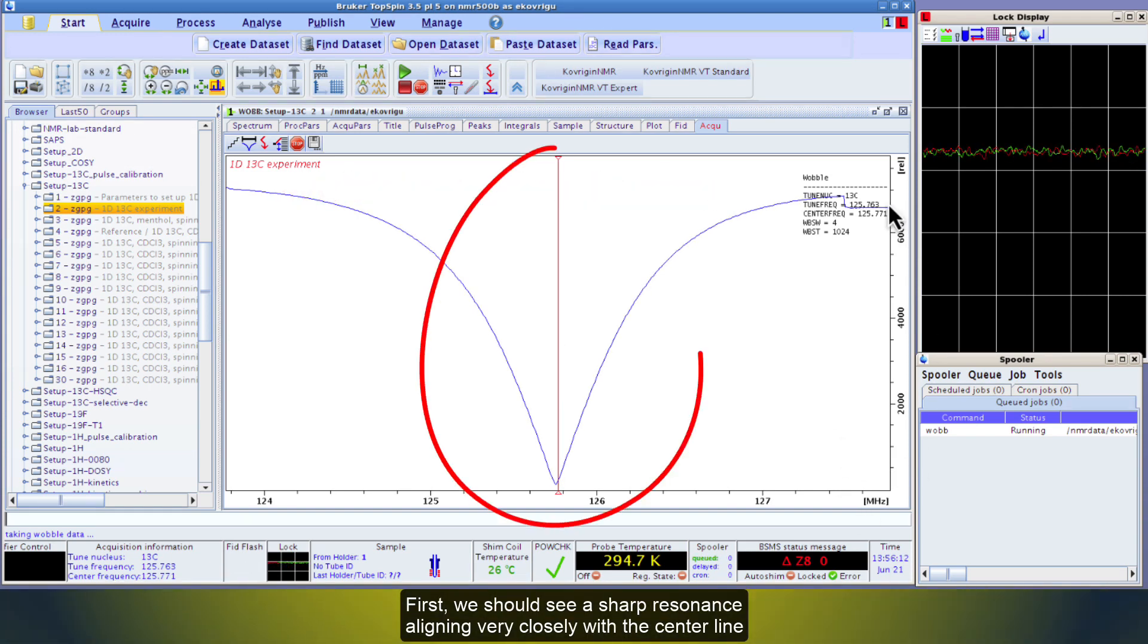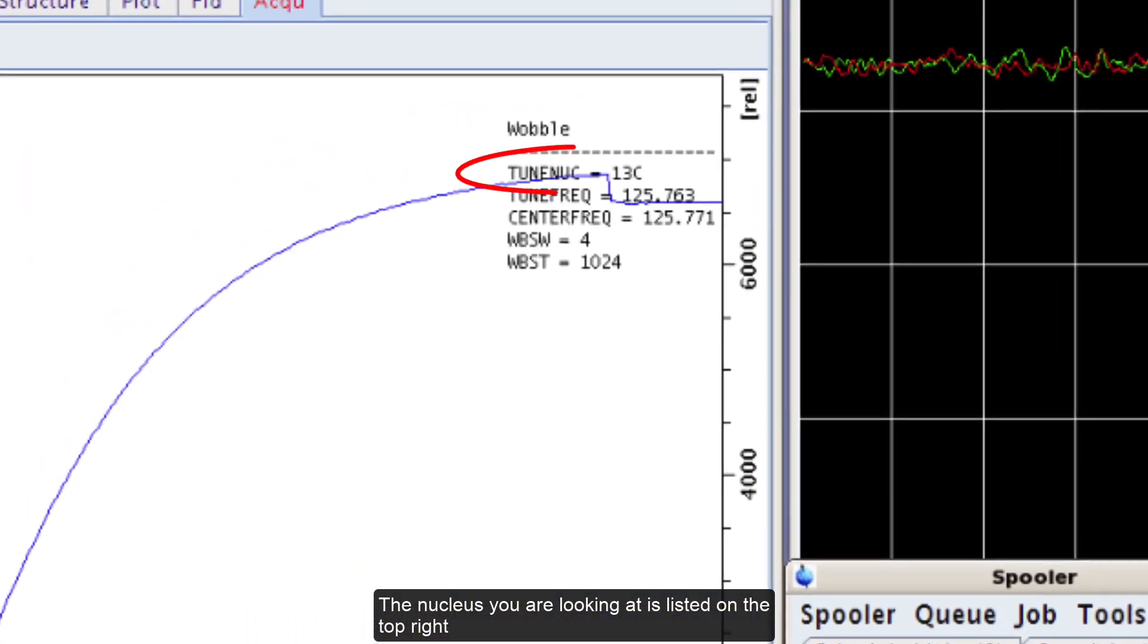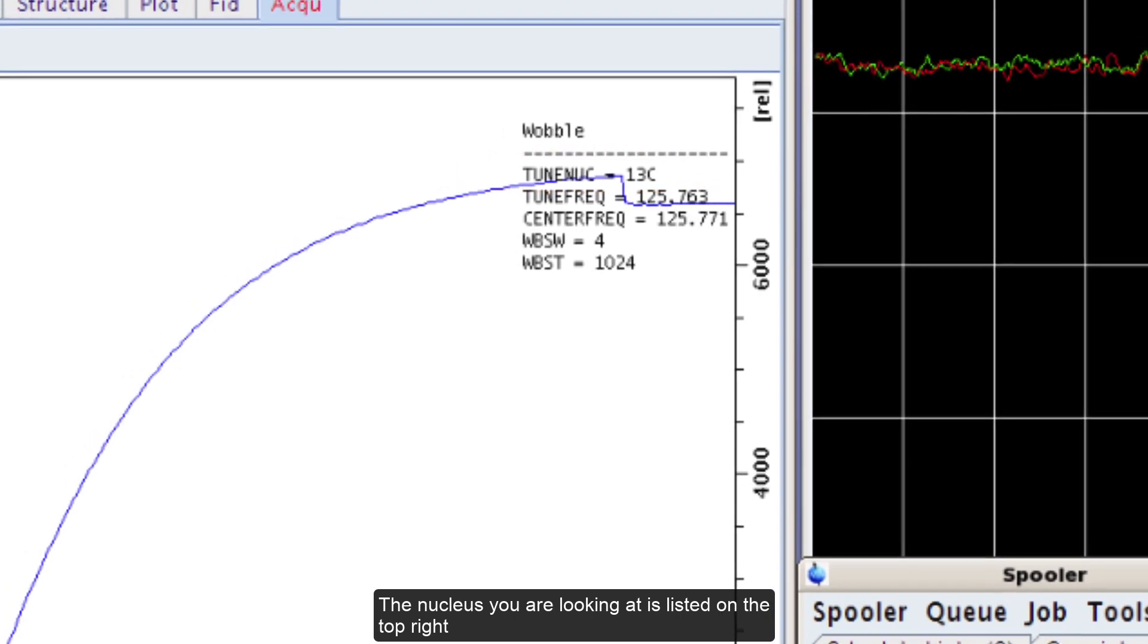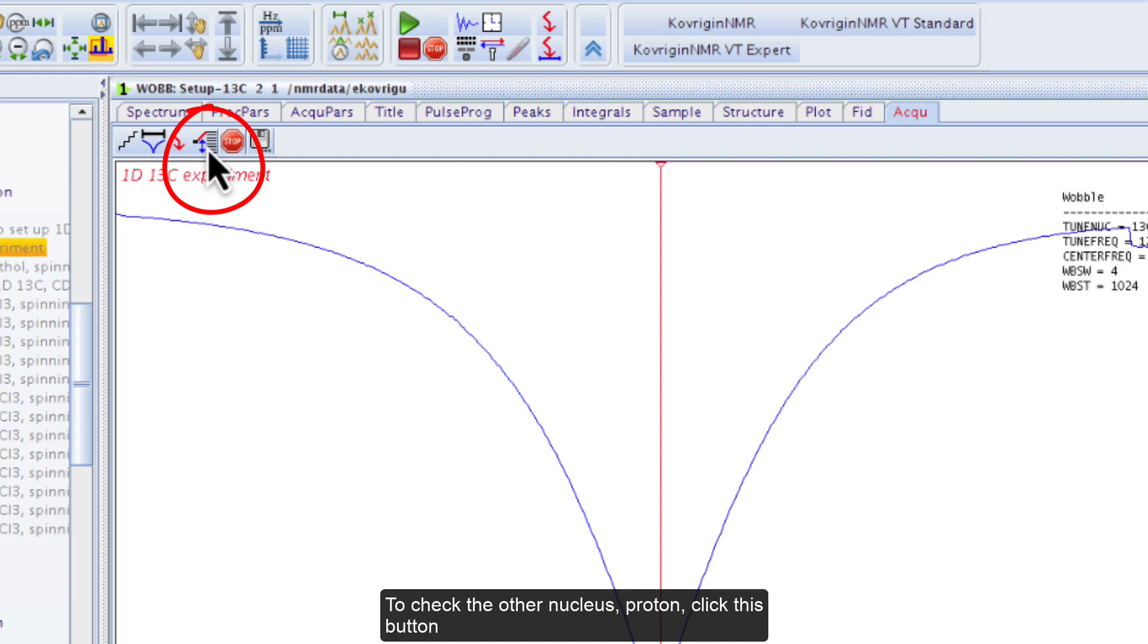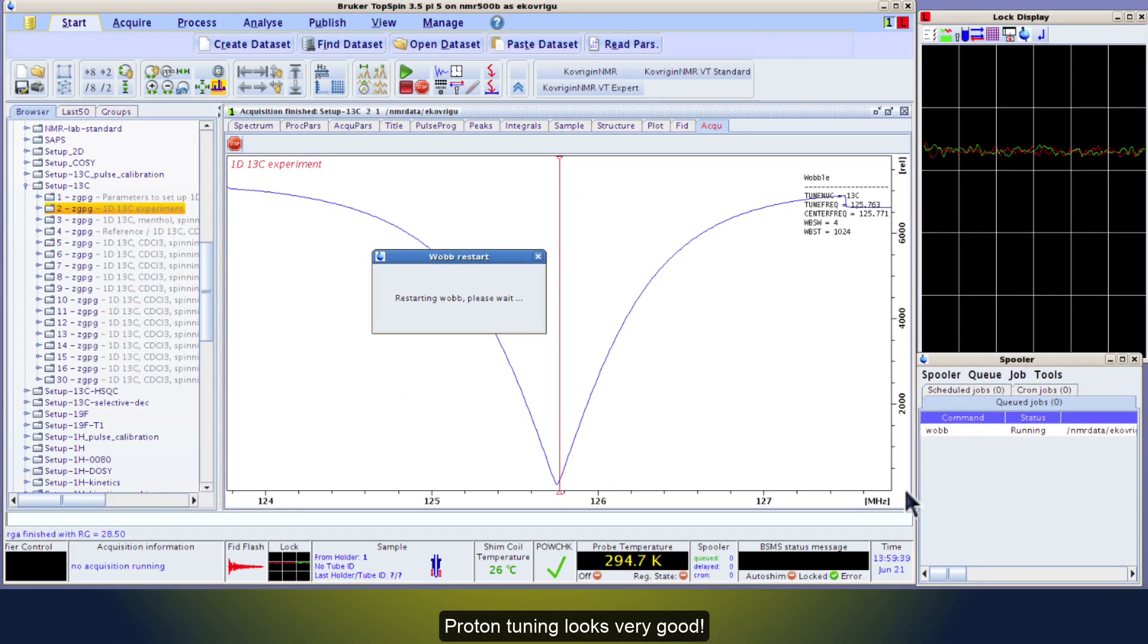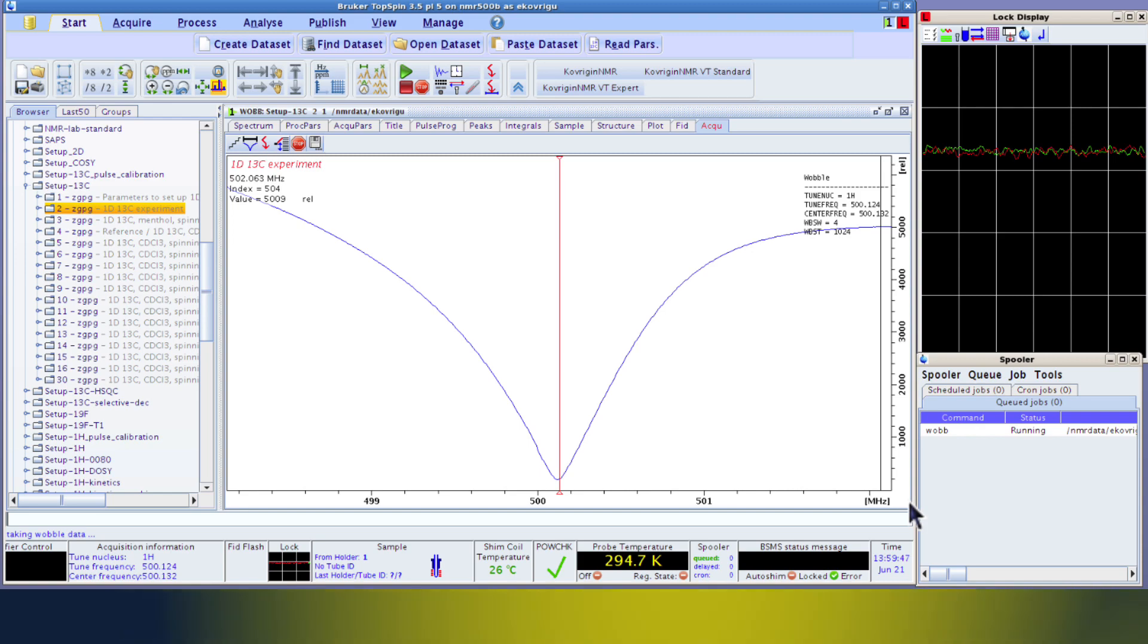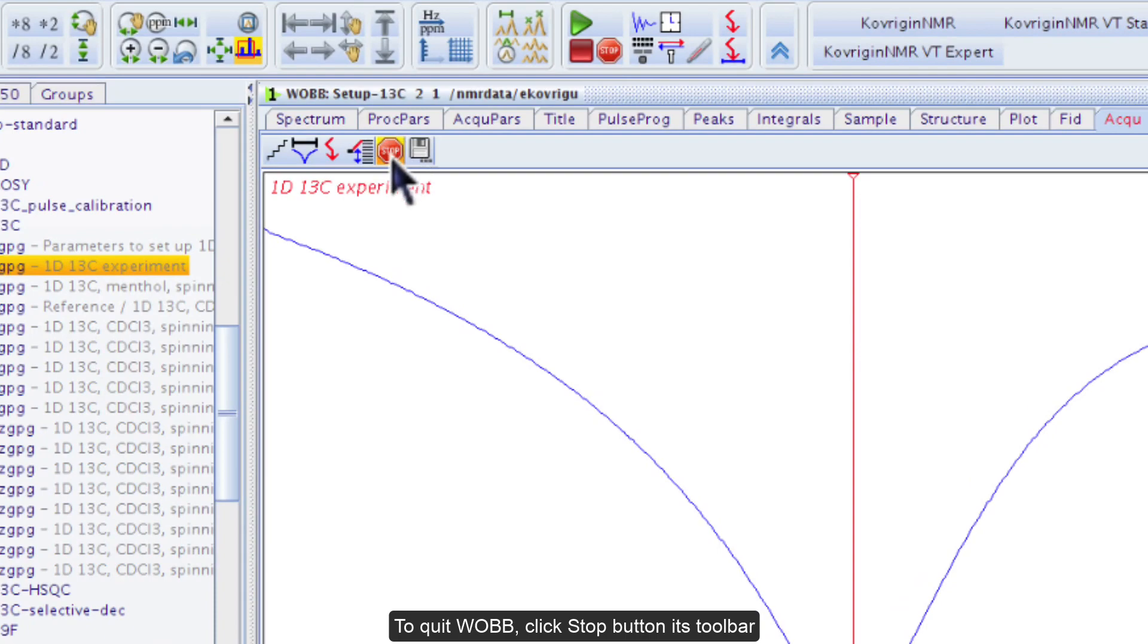This screen will not disappear until we tell it to. First, we should see a sharp resonance, aligning very closely with the center line. The nucleus you are looking at is listed on the top right. To check the other nucleus, Proton, click this button. Proton tuning looks very good. To quit Wob, click Stop button in its toolbar.